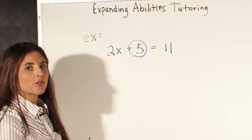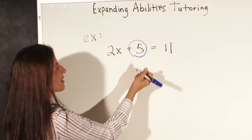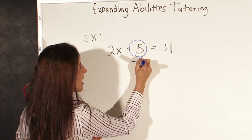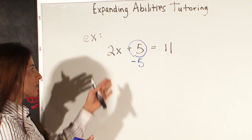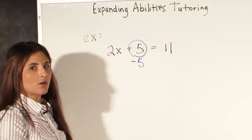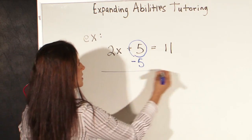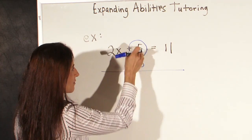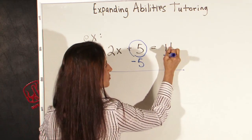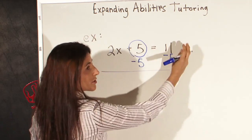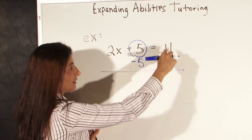So what we're going to do is the opposite of plus 5, which is subtract 5. And when we do that, we need to do it on both sides of the equal sign. So here we have minus 5 from this side of the equal sign, and we're also going to subtract 5 on the other side of the equal sign underneath the 11.